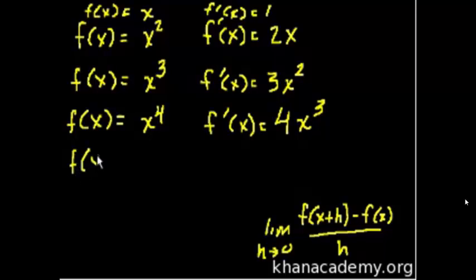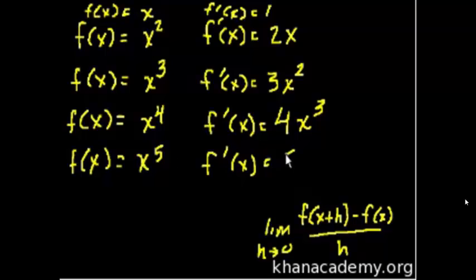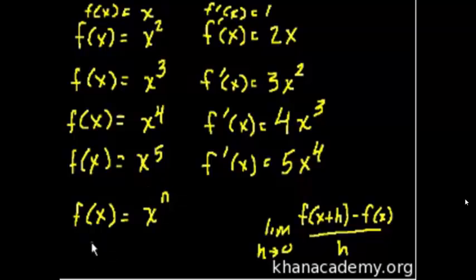And then you could probably guess what the next one is. If f of x is equal to x to the fifth, then the derivative is, I think you could guess, it's 5x to the fourth. So in general, for any expression within a polynomial, or any degree x to whatever power, let's say f of x is equal to x to the n, where n could be any exponent, then f prime of x is equal to nx to the n minus 1.